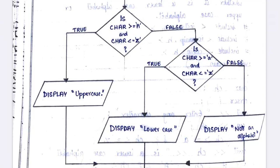So this logic checks: if the character is between capital letter 'A' and capital letter 'Z', then it is uppercase. If that condition is true, it comes to the true part and displays 'it is an uppercase letter'. If the condition is false — meaning the character is not in that range — it goes to the false part.